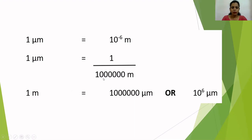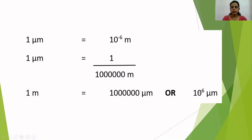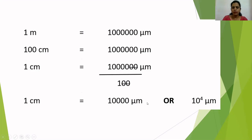One micrometer equals 10⁻⁶ meters, which can also be written as one divided by one million meters — that is, one over 10 lakhs. From this equation we can find one meter: one meter equals 10 to the power of 6 micrometers, or 10 lakh micrometers. Remember: 1 m = 10⁶ µm.